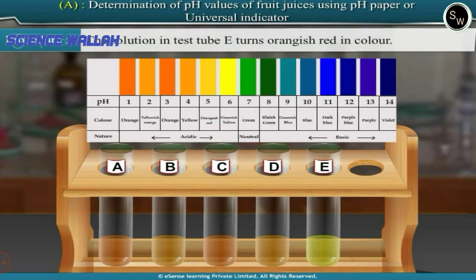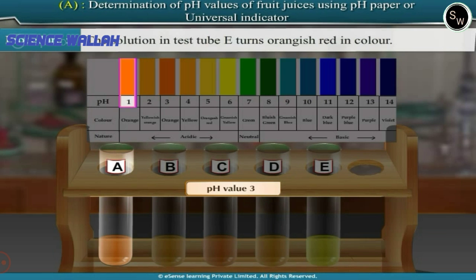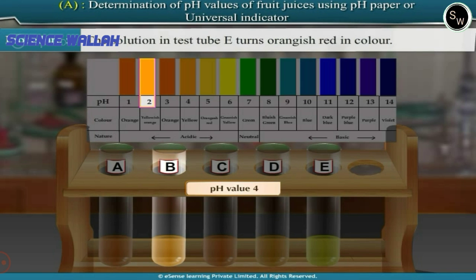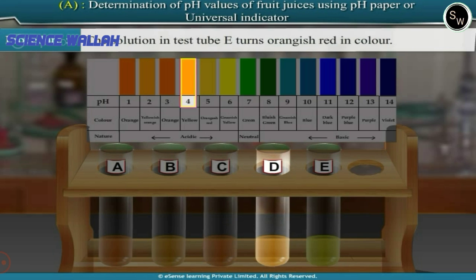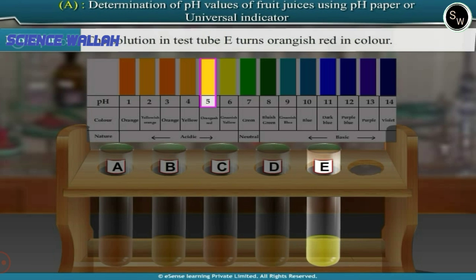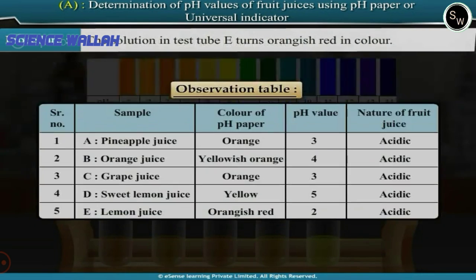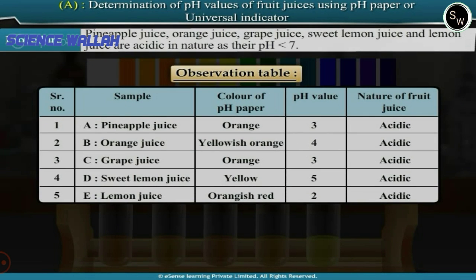On comparing these colors with the standard pH color chart, we can say: pH of pineapple juice is around 3, pH of orange juice is around 4, pH of grape juice is around 3, pH of sweet lemon juice is around 5, and pH of lemon juice is around 2. Therefore, all the juices are acidic in nature as their pH values are less than 7.